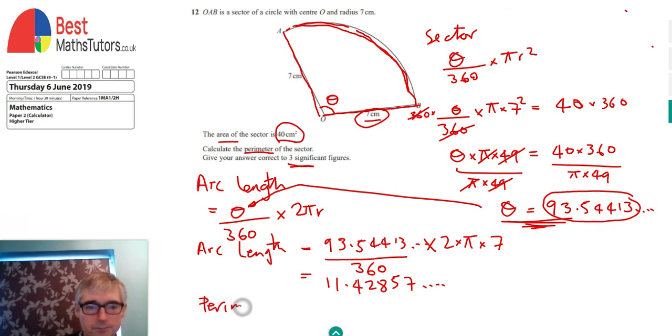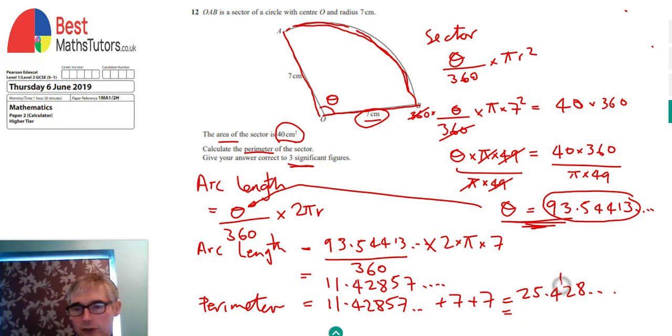So the perimeter is equal to 11.4285 etc. plus 7 plus another 7, and that comes to 25.428 etc. If we round that up to three significant figures we're going to cut it off here. We decide whether the 4 has got to be put up to a 5 or not by looking at the next figure which is the 2, and because the 2 is below 5 we keep the 4 as a 4.